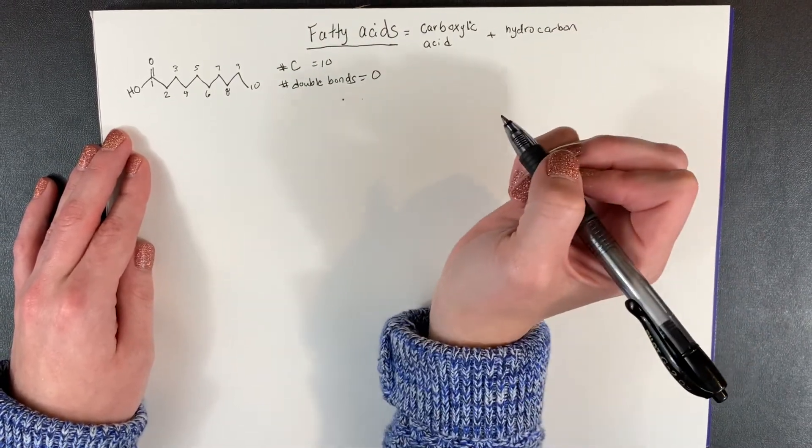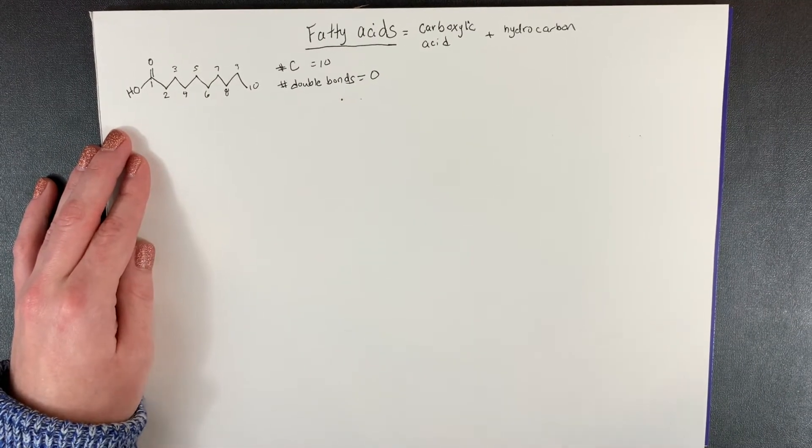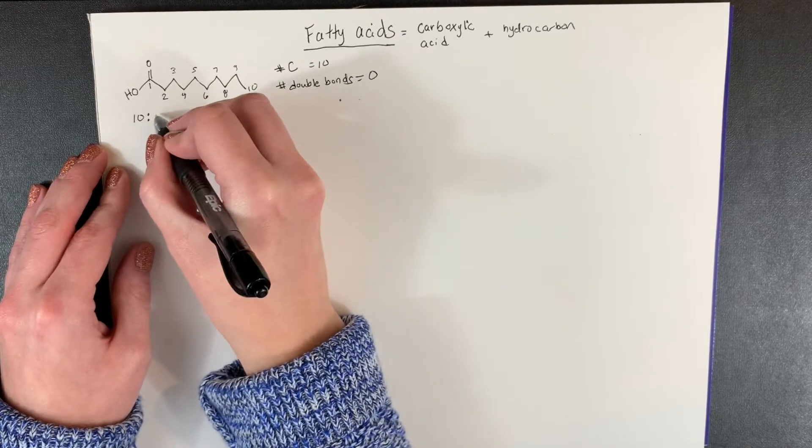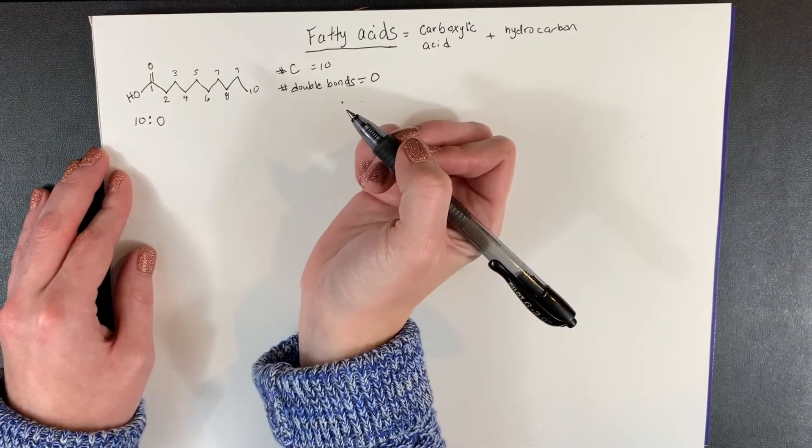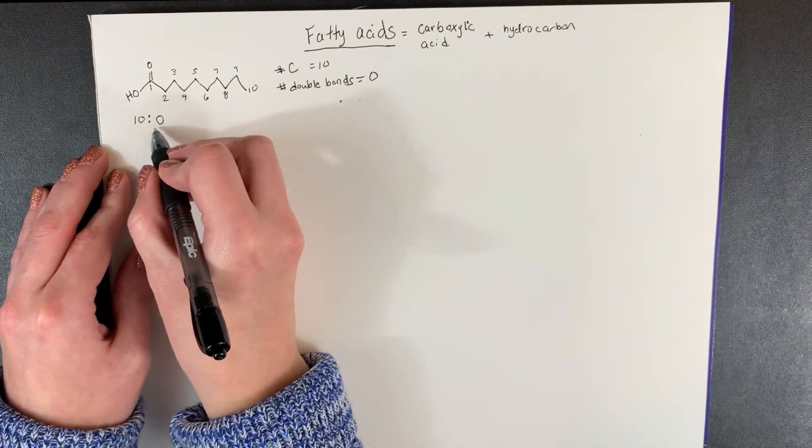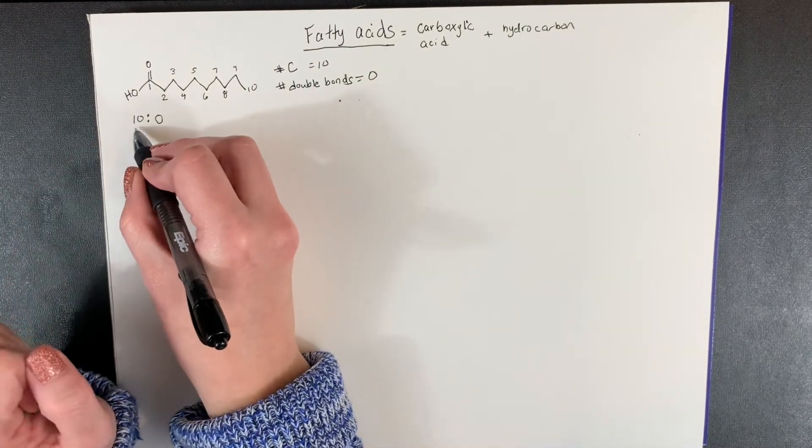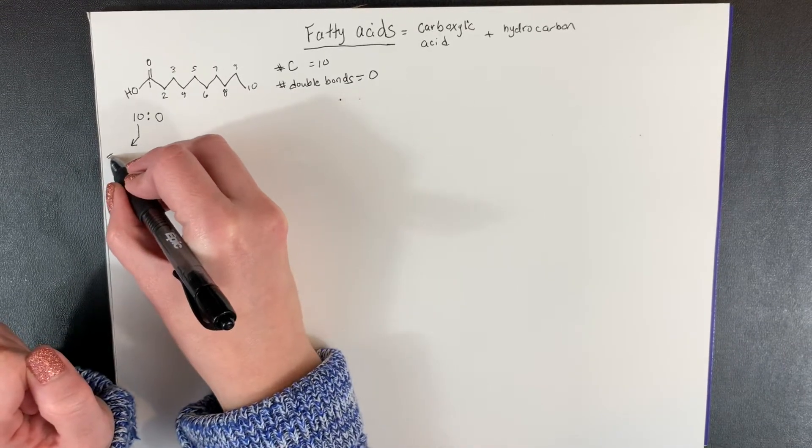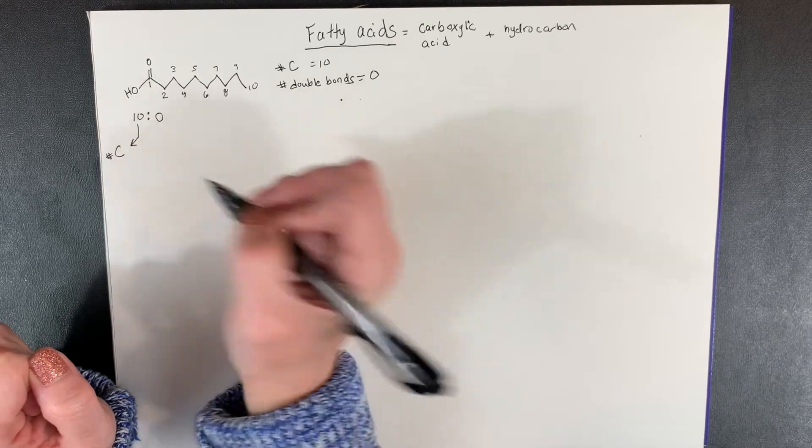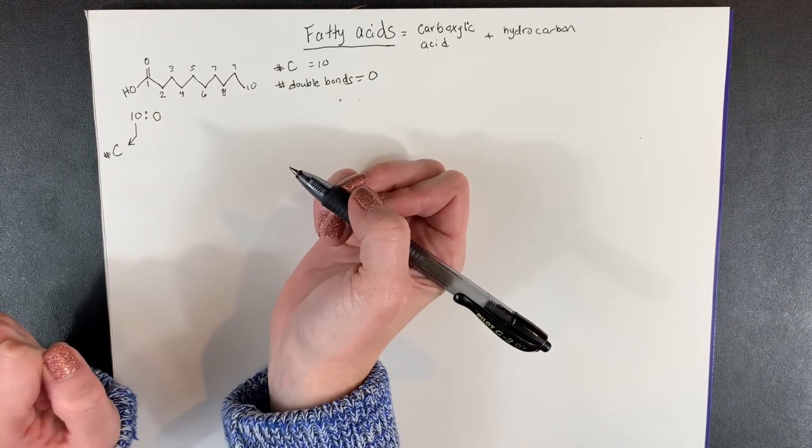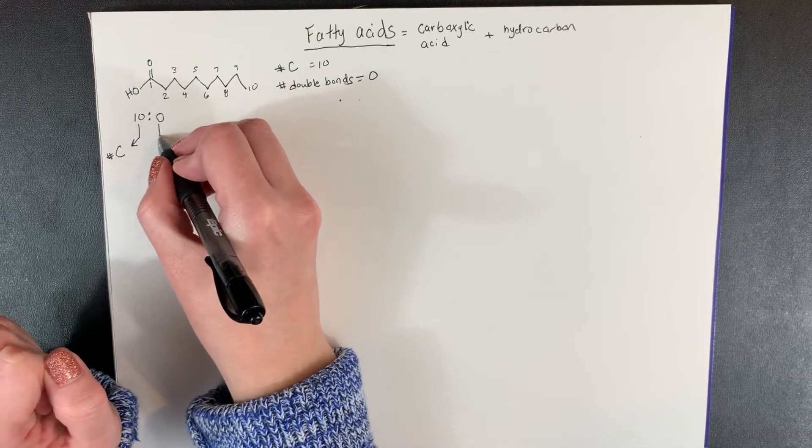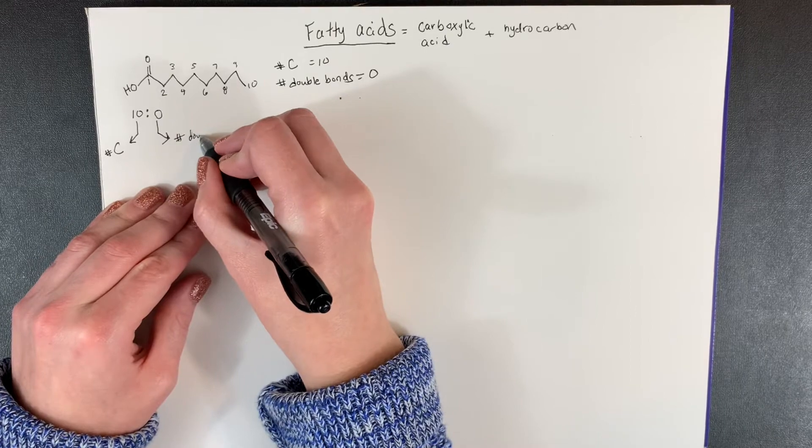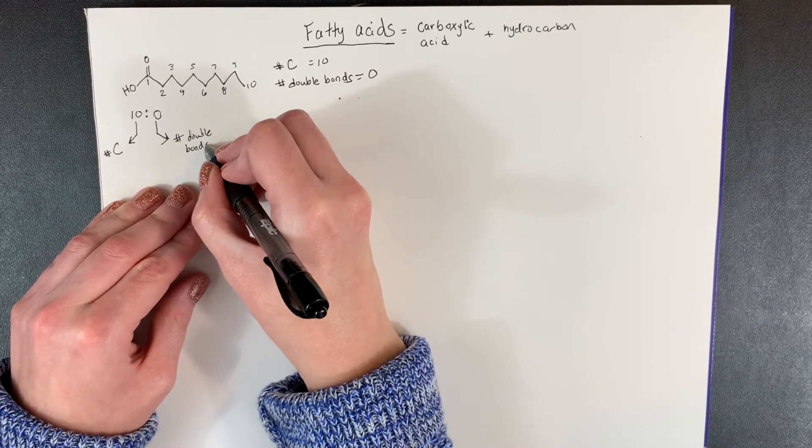Now how you'll see these two numbers written out to describe a fatty acid is you would see it be 10 colon zero. So when you see these two numbers represented like this, what this information is telling you is the first number before the colon is always the number of carbons. That is the number of carbons in the hydrocarbon chain. The second number after the colon is always telling you the number of double bonds, which again here is zero in this example.